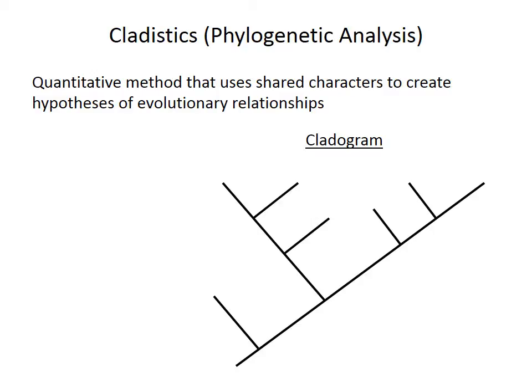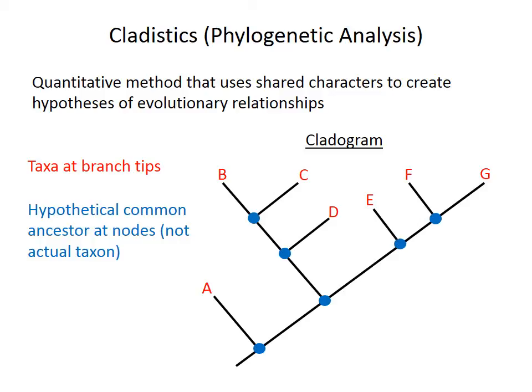The method of cladistics, or phylogenetic analysis, provides that explicitly evolutionary framework, using shared anatomical characters to create hypotheses of evolutionary relationships. The result is called a cladogram, which arranges taxa on branching trees. Taxa are placed at the branch tips, and the branching points, or nodes, represent hypothetical common ancestors from which those species diverged.